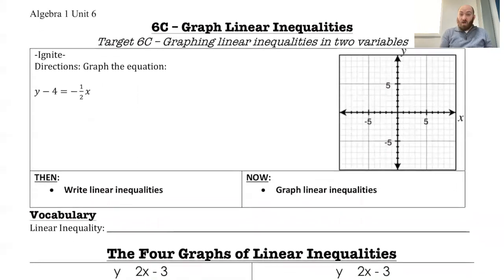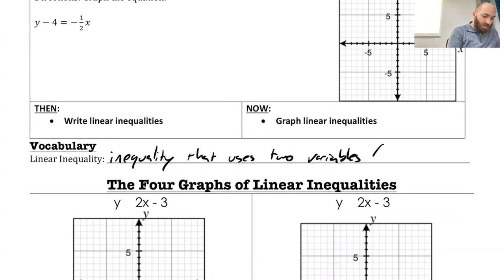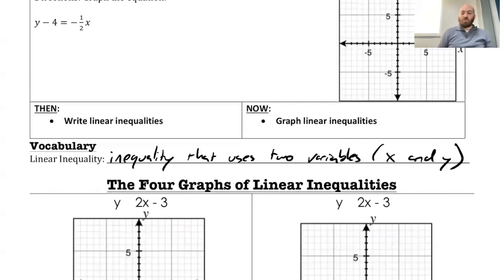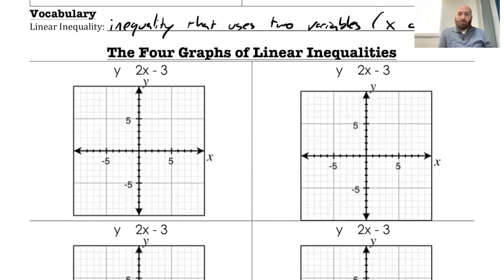So to start, let's define that. A linear inequality is an inequality that uses two variables, usually x and y. So what that means when we graph this, since we're using two variables, we're actually going to graph in four possibilities.